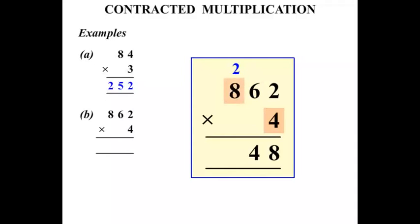4 times 8 is 32 plus 2 is 34. And since there's no other calculation, let's write the 34 down now. So our answer there, 3448.